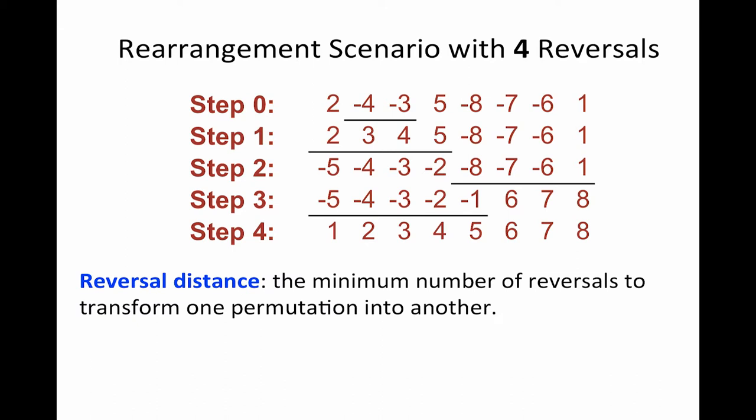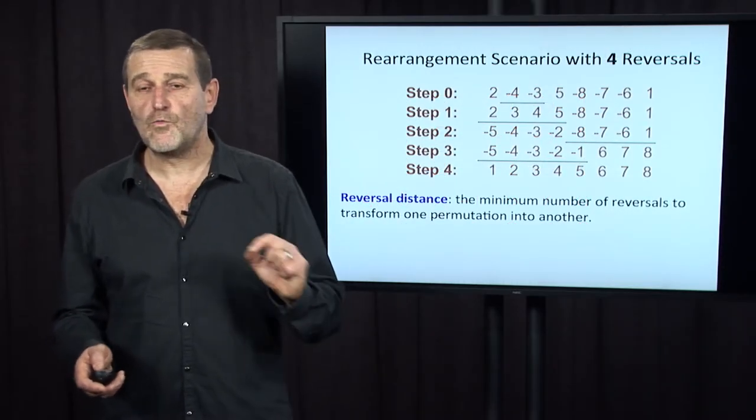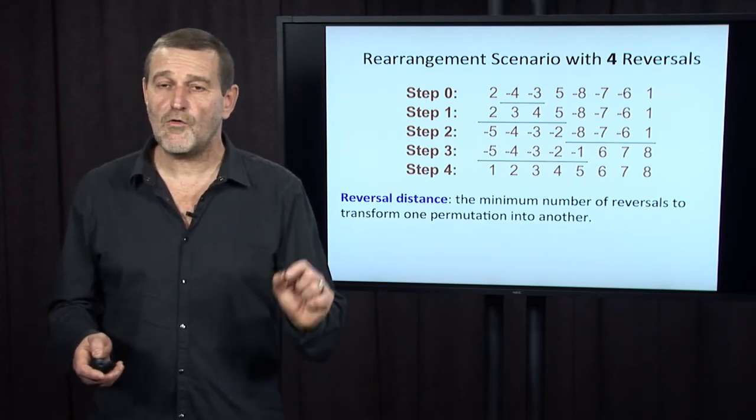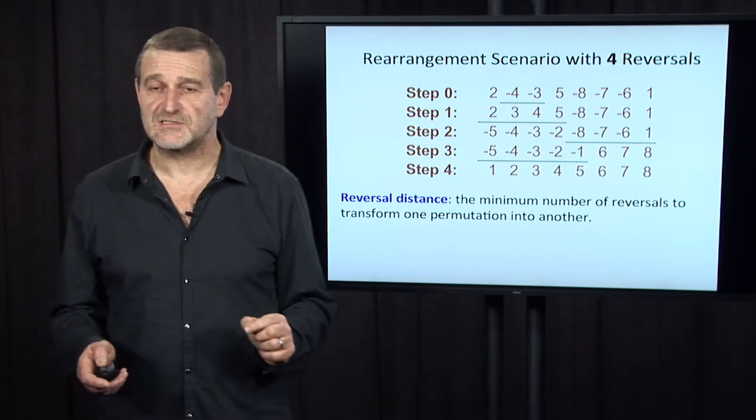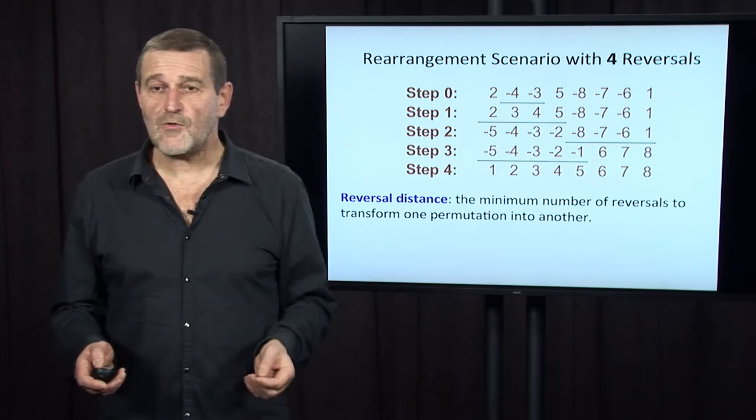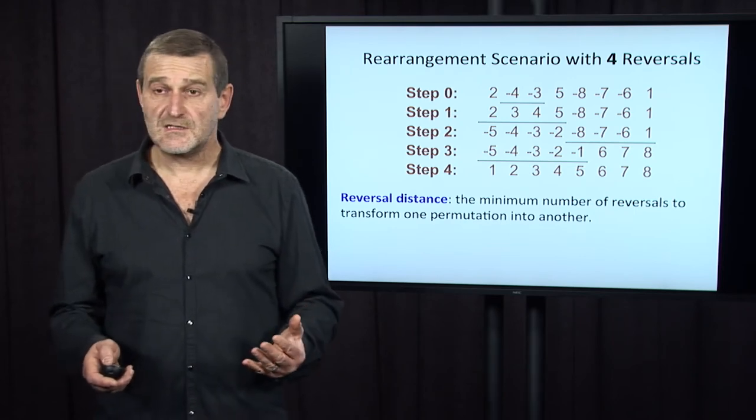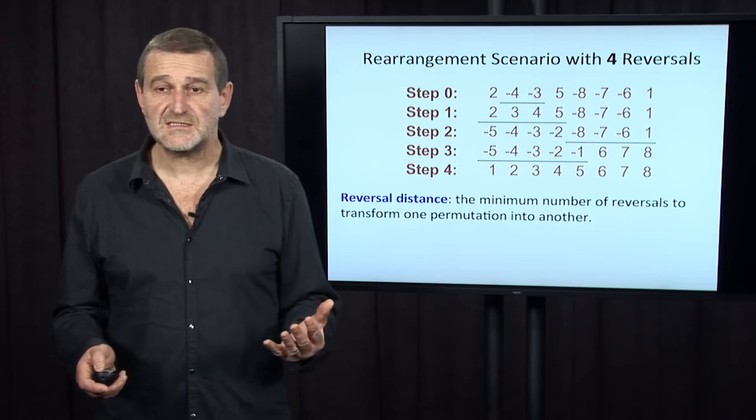And we'll define reversal distance as the minimum number of reversals to transform one permutation into another. Biologists are often interested in shortest scenarios for transforming one genome into another because these shortest scenarios often correspond to biological scenarios or come close to biological scenarios. So we now have transformation of one genome into another with four reversals. But maybe there is even faster transformations of these genomes with just three reversals.